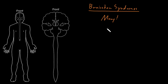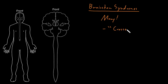A general pattern that may occur with a brainstem lesion on one side is a distinctive syndrome we call a crossed syndrome. This is a crossed syndrome that can be pretty distinctive for a brainstem lesion on one side, and this kind of involves two parts.